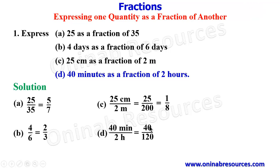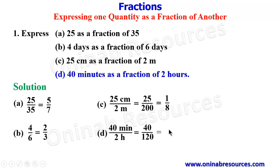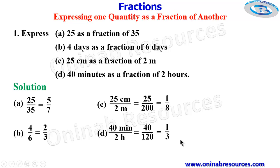2 hours gives us 120 minutes. So the fraction becomes 40 over 120. Simplifying, 4 divides both to give 4 over 12, then 4 divides 4 to give 1, and 4 divides 12 to give 3. So the resulting fraction is 1 over 3 in the simplest form. And that's all for the solution of problem 1.